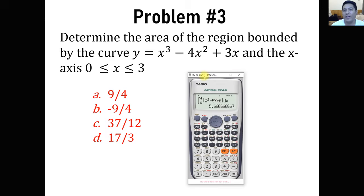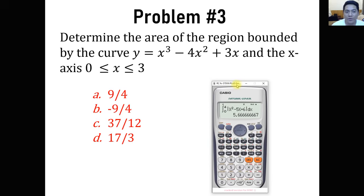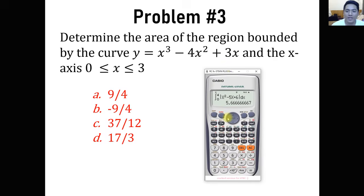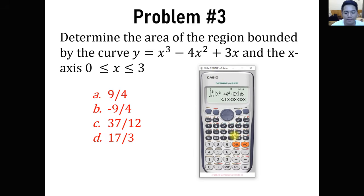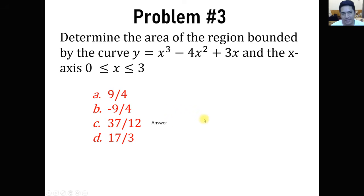For number 3, determine the area of the region bounded by the curve y equals x cubed minus 4x squared plus 3x and the x-axis where x is between 0 and 3. Same process: x cubed minus 4x squared plus 3x with limits from 0 to 3, still inside the absolute value. We get 3.08, which is 37 over 12. So the answer is letter C for this problem.